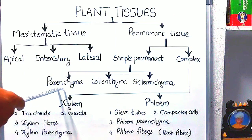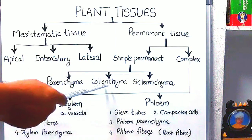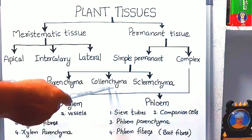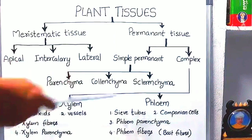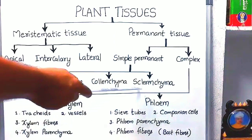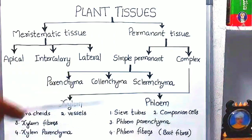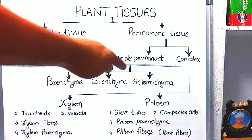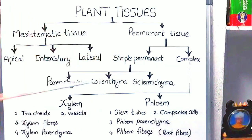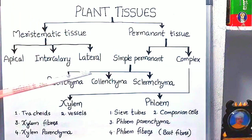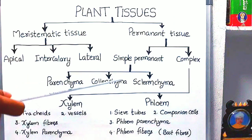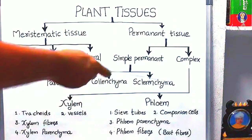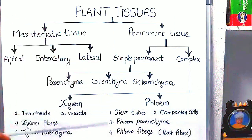Parenchyma is a living tissue, collenchyma is a living mechanical tissue, and sclerenchyma is a dead mechanical tissue. Next, complex permanent tissues — what is the meaning of complex permanent tissues? It means more than one type of cells are present in complex permanent tissues.